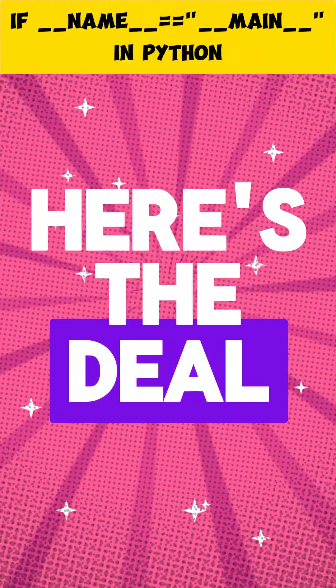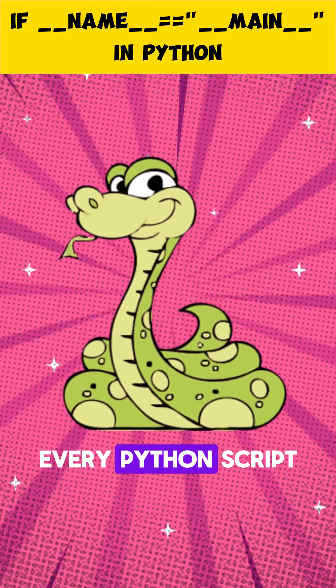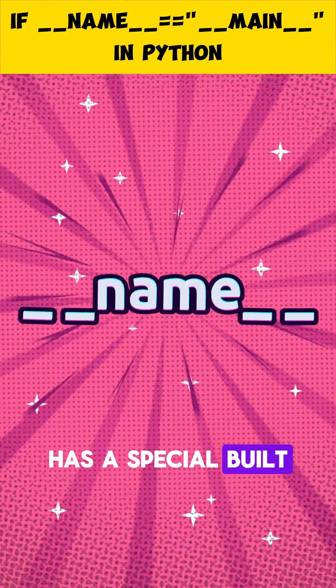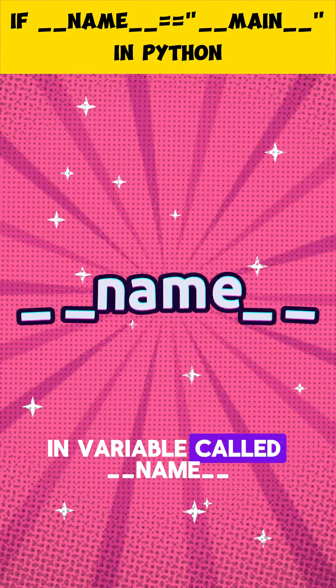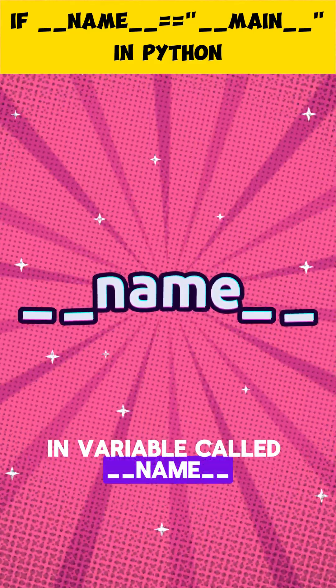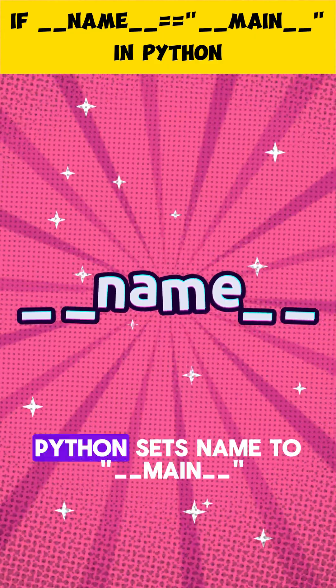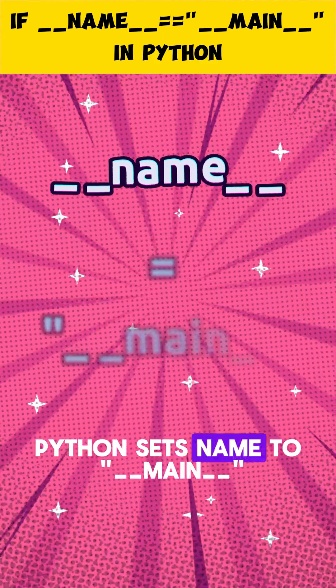Here's the deal. Every Python script has a special built-in variable called __name__. When a script is executed, Python sets __name__ to __main__.